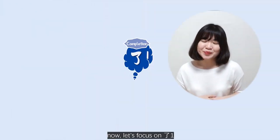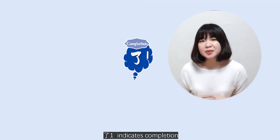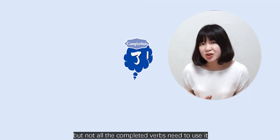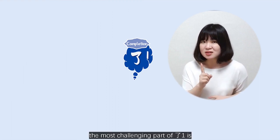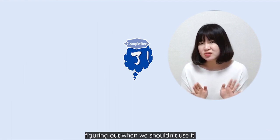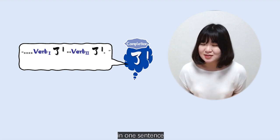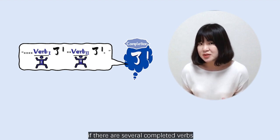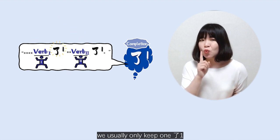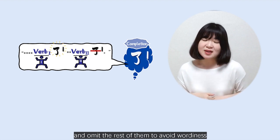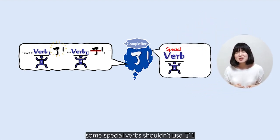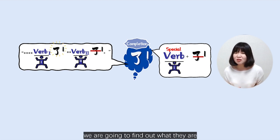Now let's focus on 了1. 了1 indicates completion, but not all completed verbs need to use it. The most challenging part of 了1 is figuring out when we shouldn't use it. Two tips. Tip 1: in one sentence, if there are several completed verbs, we usually only keep one 了1 and omit the rest to avoid wordiness. Tip 2: some special verbs shouldn't use 了1. We are going to find out what they are.